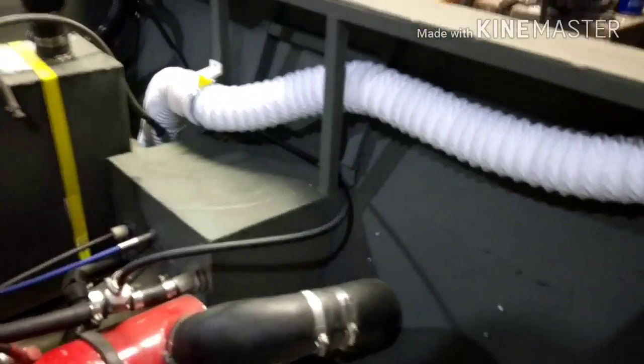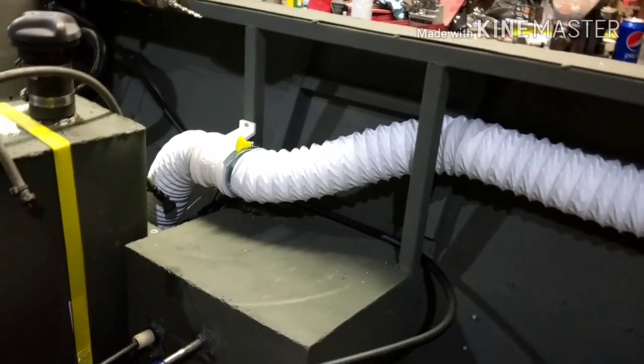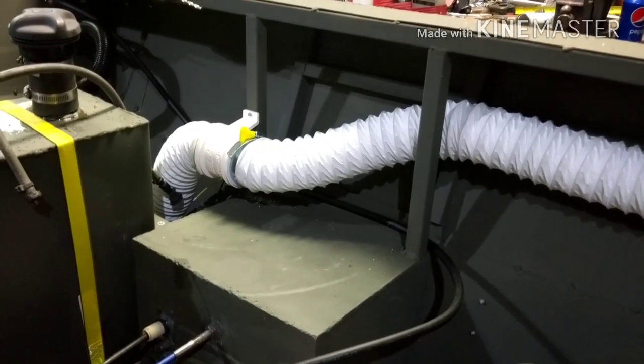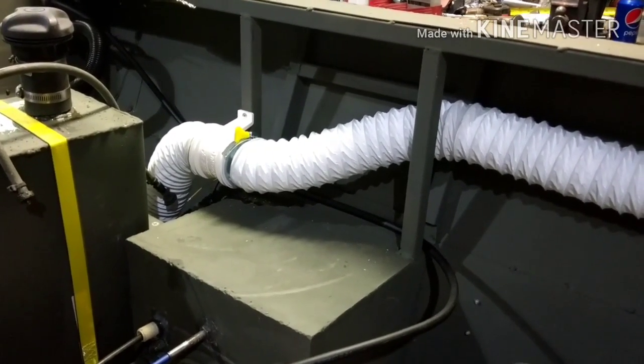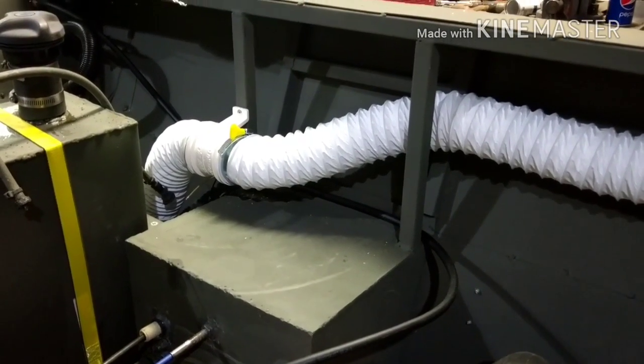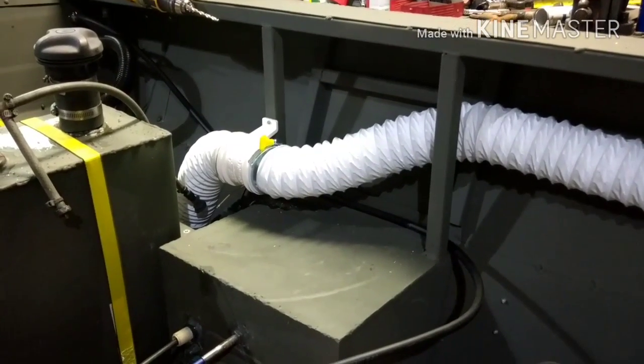We have a bilge blower. I believe that moves 130 cubic feet of air a minute. So that thing will suck the stripes off a raccoon and keep going. What that's going to do is clear out the bilge of any fuel vapors or anything like that.